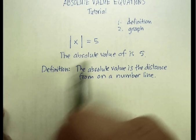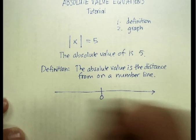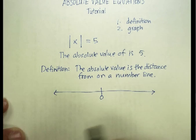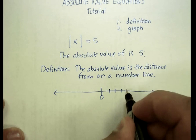According to this, my absolute value is 5. So here's my number line, and here's my zero. So let's move out 5 from zero, 5 units: 1, 2, 3, 4, 5.